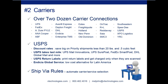With ship via rules inside Starship, you can set up rules to have Starship automatically select your carrier service based on the rule. Some clients have a ship via called Best Way, which triggers a rule to automatically select the carrier that will get the package to its destination in the least amount of time or at the least expense. Starship can automatically create or select that carrier and service based on the rule.